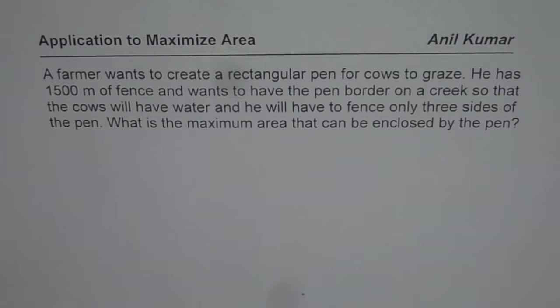A farmer wants to create a rectangular pen for cows to graze. He has 1,500 meters of fence and wants to have the pen bordered on a creek so that the cows will have water and he will have to fence only three sides of the pen. What is the maximum area that can be enclosed by the pen?